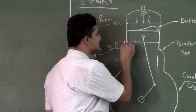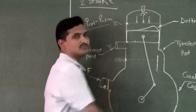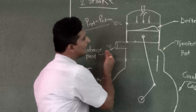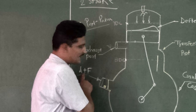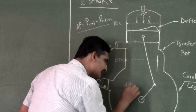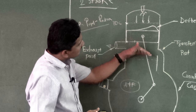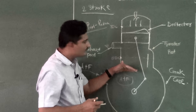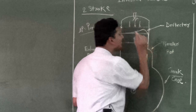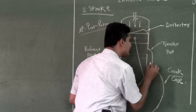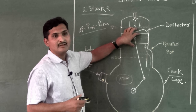After the exhaust port opens and exhaust gases are removed, as the piston continues moving downward, the transfer port also opens. The fresh charge — air plus fuel — that had entered from the inlet port and was stored in the crankcase is now compressed on the downside of the piston as it moves down. The volume reduces and pressure increases. Once the piston uncovers the transfer port, due to the high pressure on the crankcase side, the fresh charge moves upward into the cylinder.